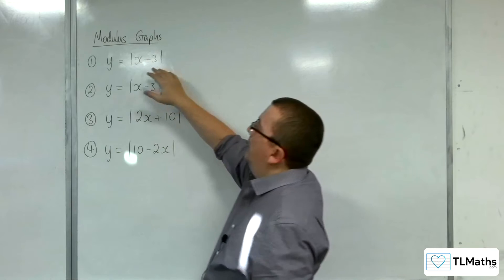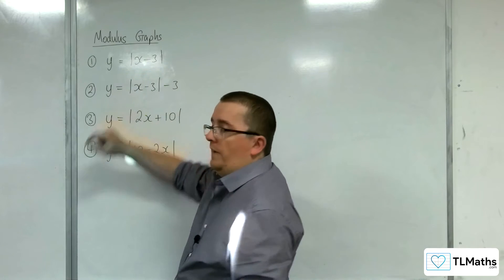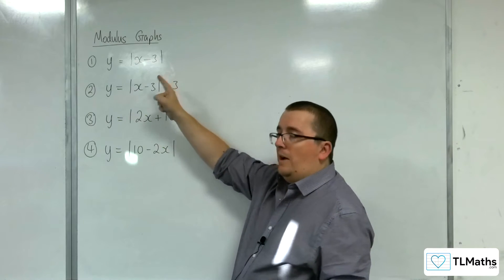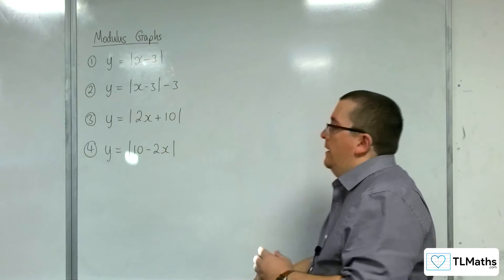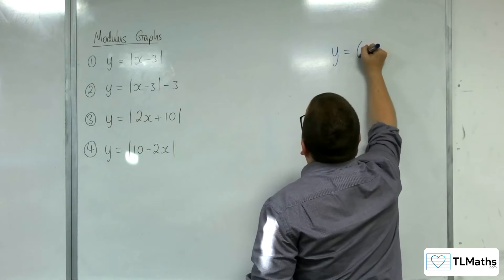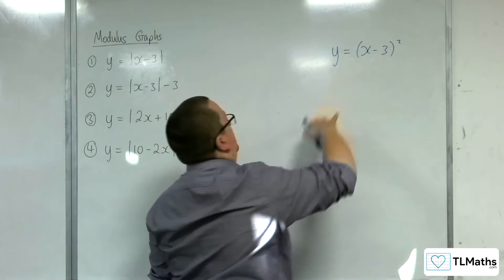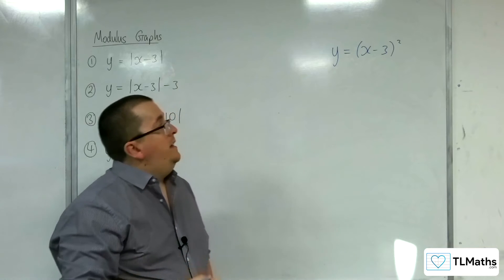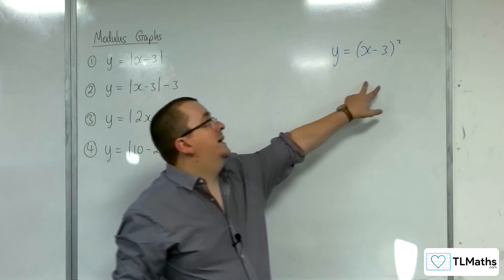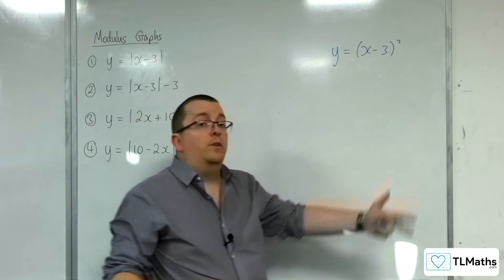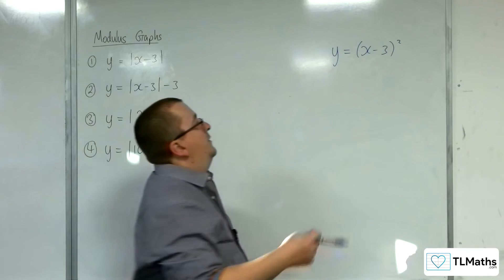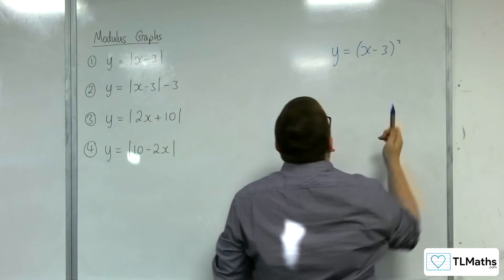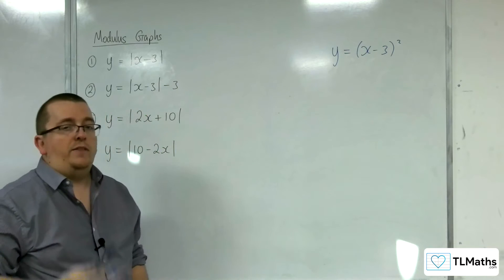Now, when I'm talking about this here, this modulus of x - 3, well, that is allowing me to identify the vertex immediately. In exactly the same way as if I was dealing with y = (x - 3)², I'd be able to say that the vertex is at (3, 0). Because x equals 3 will make this bracket 0. So I know that (3, 0) is a point on the graph.